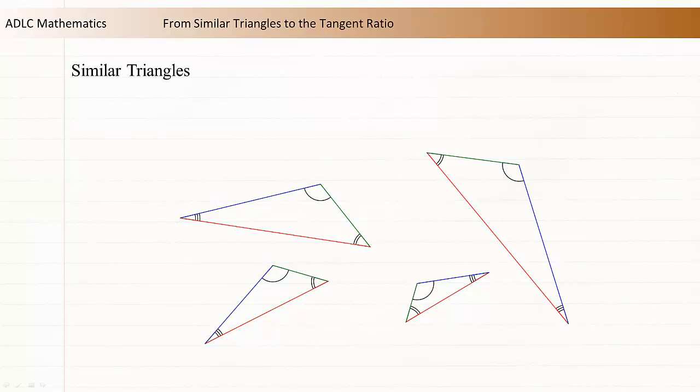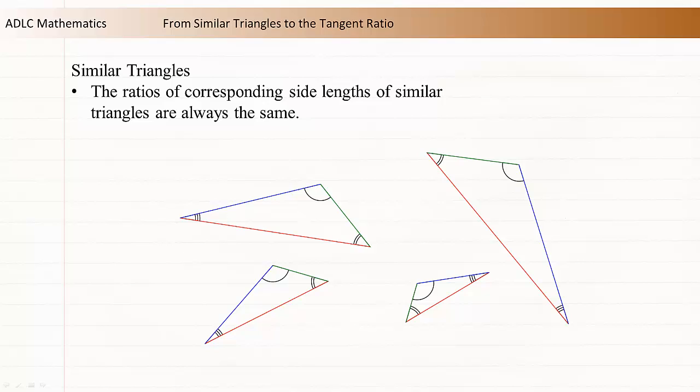In the module you saw that an important characteristic of similar triangles is that the ratios of corresponding side lengths of similar triangles are always the same. This means that for each of these triangles, the lengths of the green side divided by the lengths of the blue sides is equal. Similarly, dividing the lengths of the red sides by the lengths of the blue sides will give you the same value for each of the triangles.